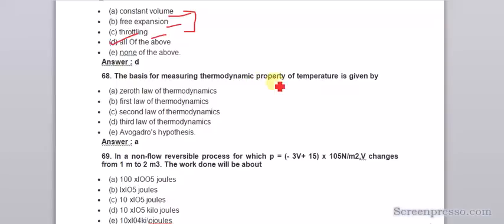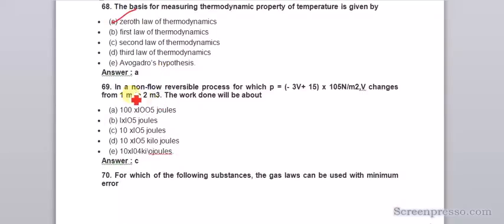The basis of measuring thermodynamic property of temperature is given by zeroth law of thermodynamics. In a non-flow reversible process for which P equals minus 3V plus 15 times 10^5 N per meter square, V changes from 1 to 2 meters.